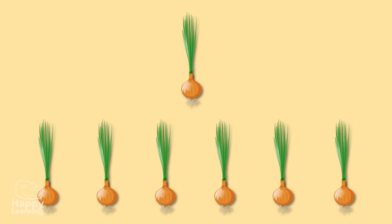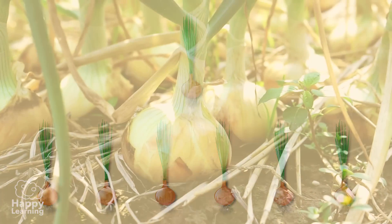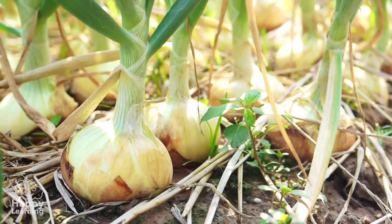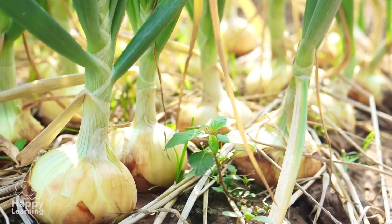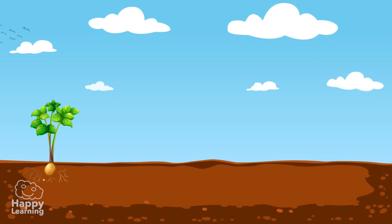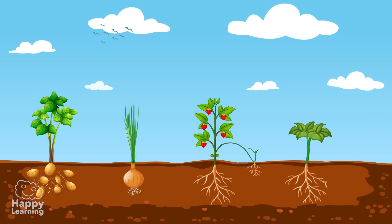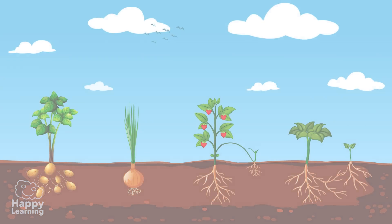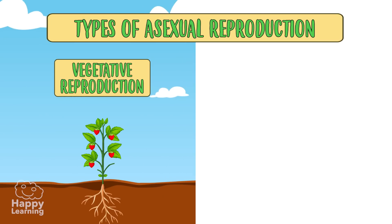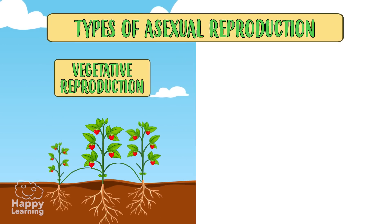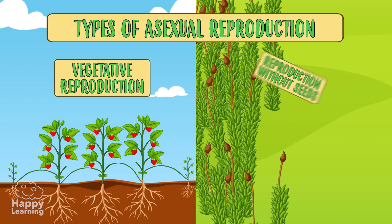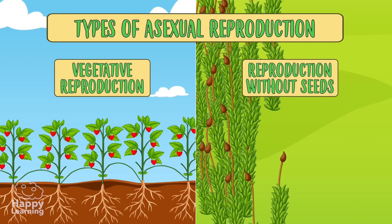The new plants will be genetically identical to the parent. New plants can originate from a single cell, tissue, organ, or a part of a mother plant. There are two types of asexual reproduction: vegetative reproduction and reproduction without seeds.